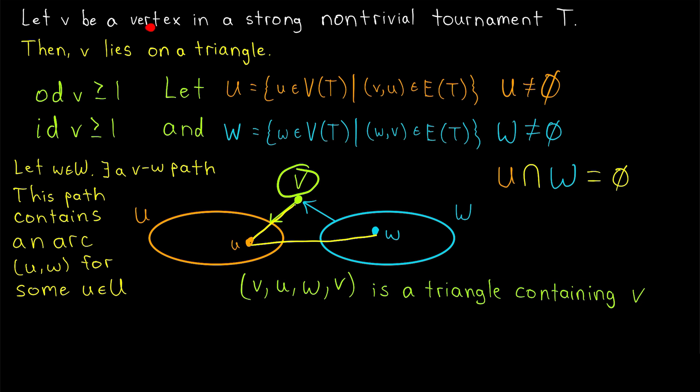So we've taken an arbitrary vertex from a strong, non-trivial tournament and shown that it lies on a triangle. Thus, every vertex of a strong, non-trivial tournament lies on a triangle.